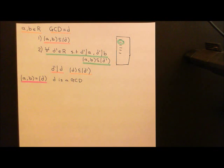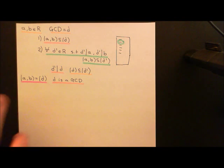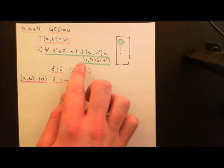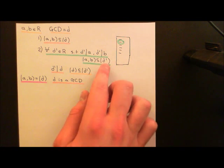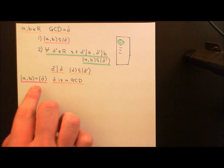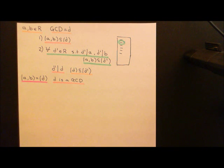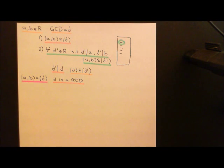But I claim that if the principal ideal generated by D is actually equal to the ideal generated by A and B, then D is not just any old common divisor — D is actually a greatest common divisor. Why? Because if the principal ideal of D equals the ideal generated by A and B, then for all other common divisors, the ideal of A and B is contained in their principal ideals, so the principal ideal of D will also be contained within all those other principal ideals.